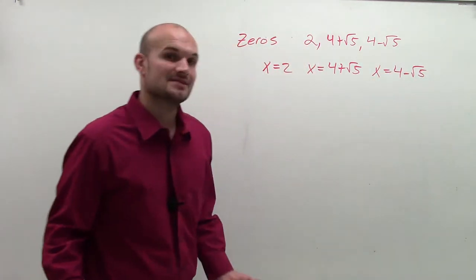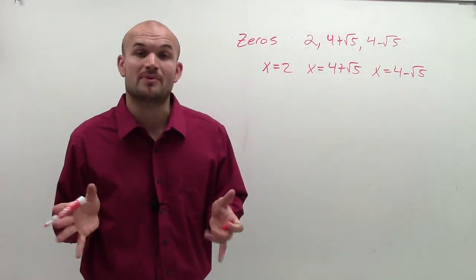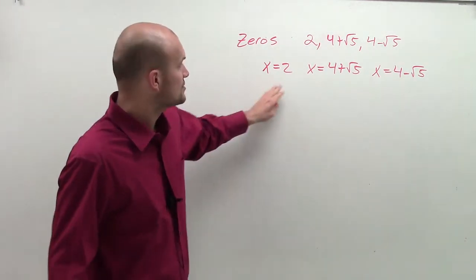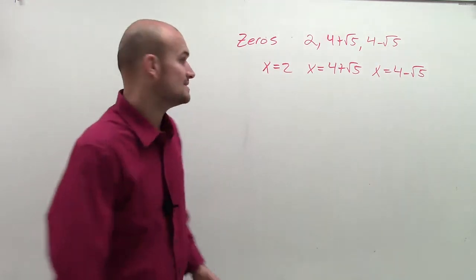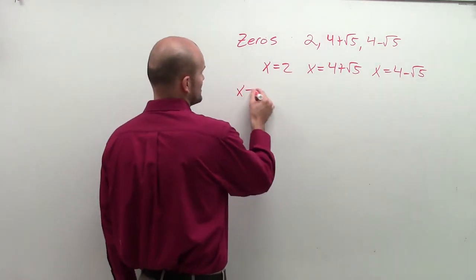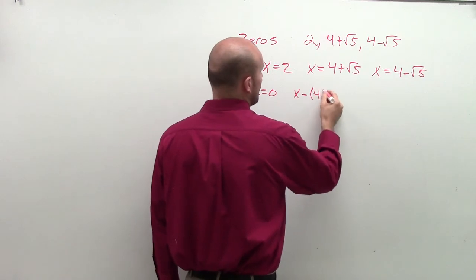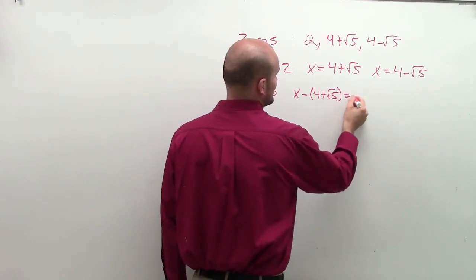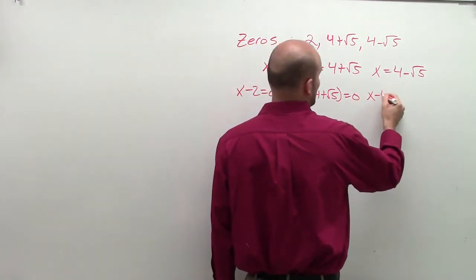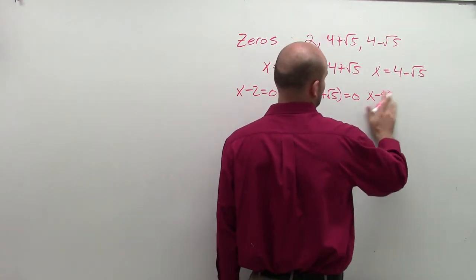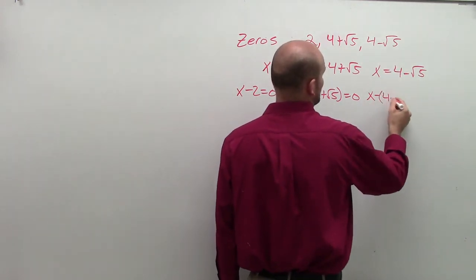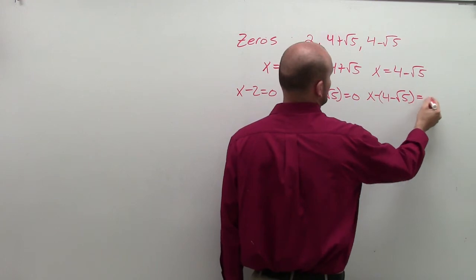Then remember, we got these to be zeros by using the zero product property and setting them equal to 0. So now what I'm going to do is I'm going to set each one of these equal to 0. So I can say x minus 2 equals 0, x minus 4 plus square root of 5 equals 0, and x minus 4 minus square root of 5 equals 0.